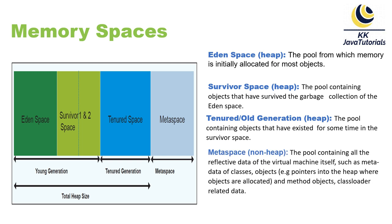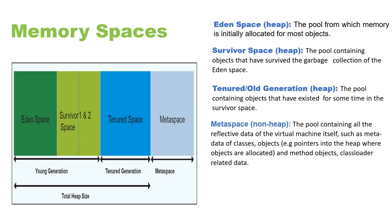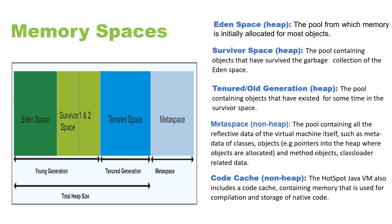Metaspace is the pool containing all the reflective data of the virtual machine itself, such as class metadata, method objects, and class loader related data. There is also a non-heap area called code cache. The Java HotSpot VM includes a code cache containing memory used for the compilation and storage of native code — for example, when you make calls from Java to native C or C++ code, the related metadata is kept in the code cache.